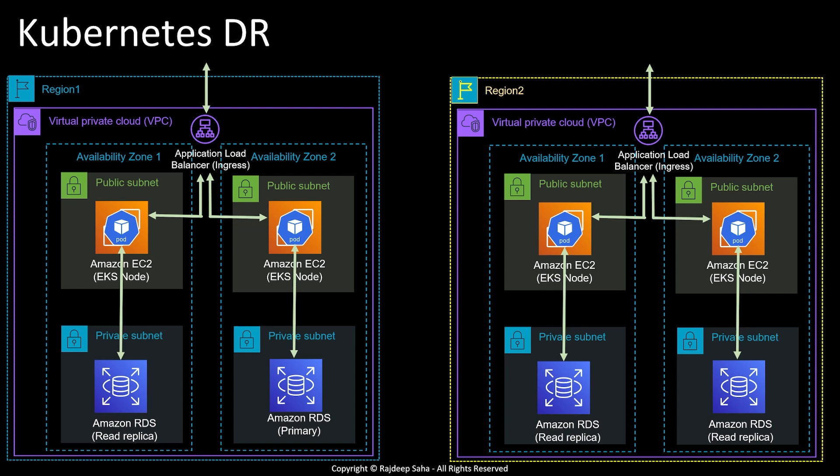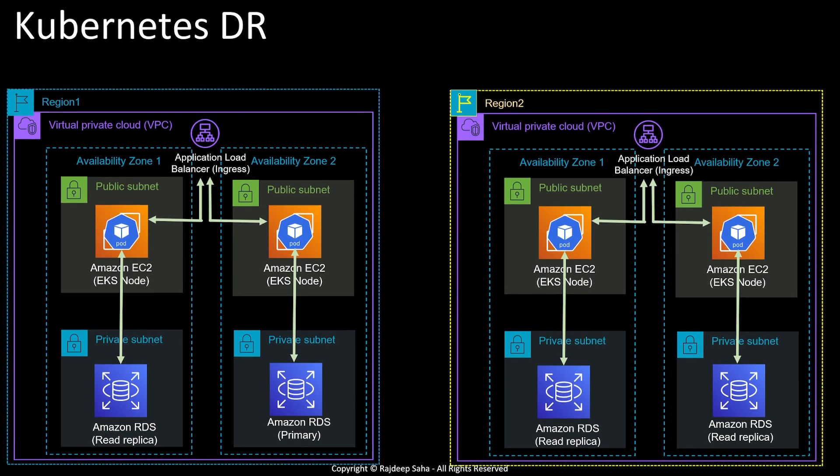Remember, application load balancer and EKS cluster are all regional services — one EKS cluster or one load balancer cannot span across multiple regions. So now you have two load balancers and two EKS clusters, and you have to have some mechanism to route traffic from one region to another in case of a failover. You can use Amazon Route 53, which is the DNS service in AWS.